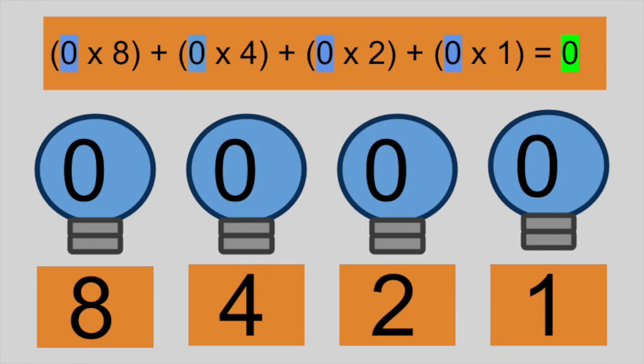Now let's break it down and start at 0 with all the lights off. To represent the value 1, we turn on the rightmost bit. What we have is 1 times 1.